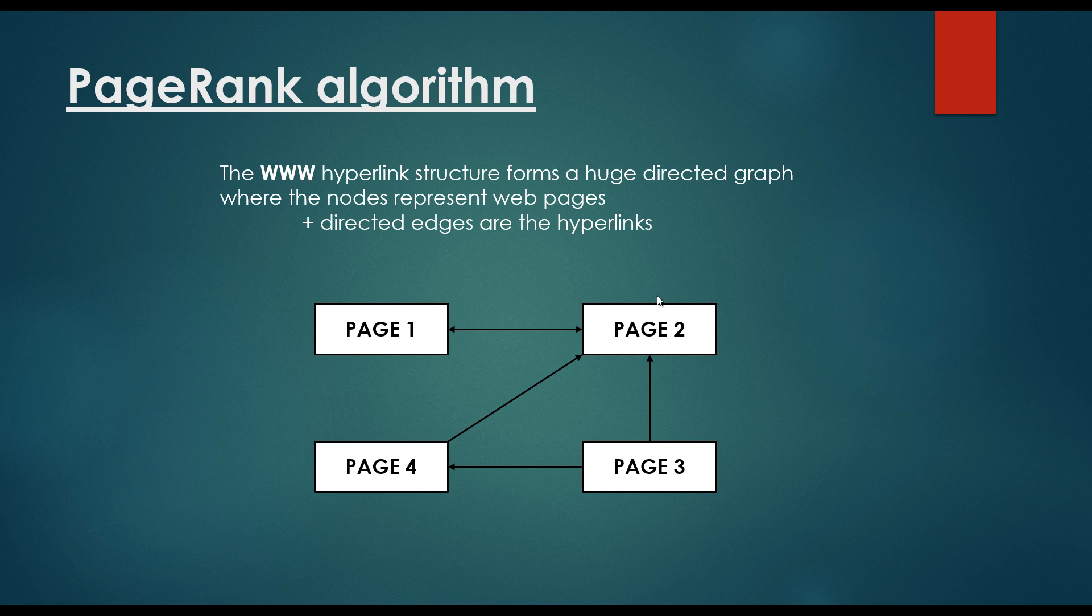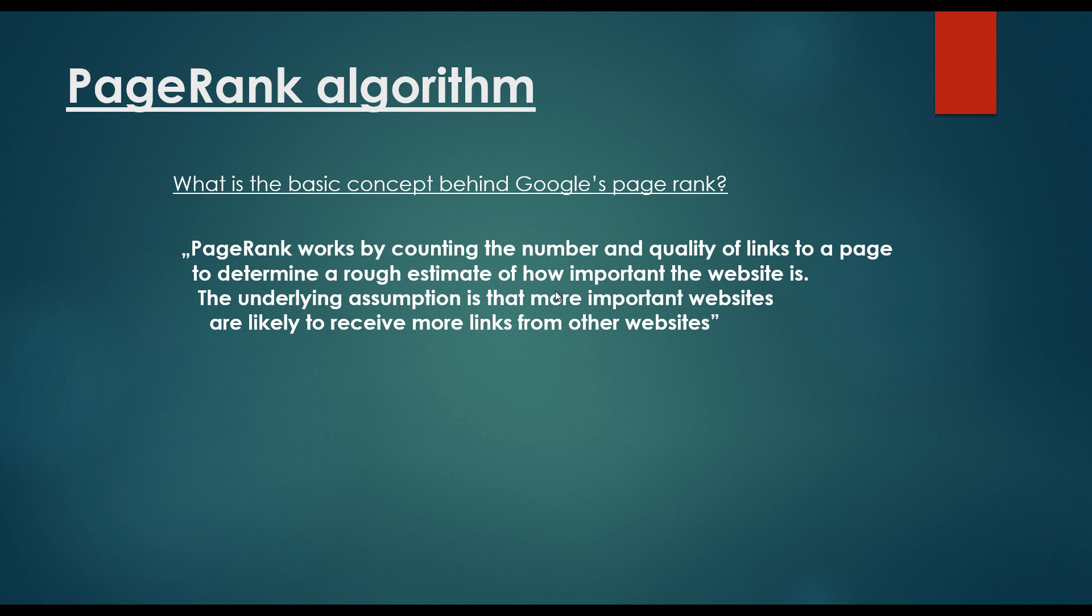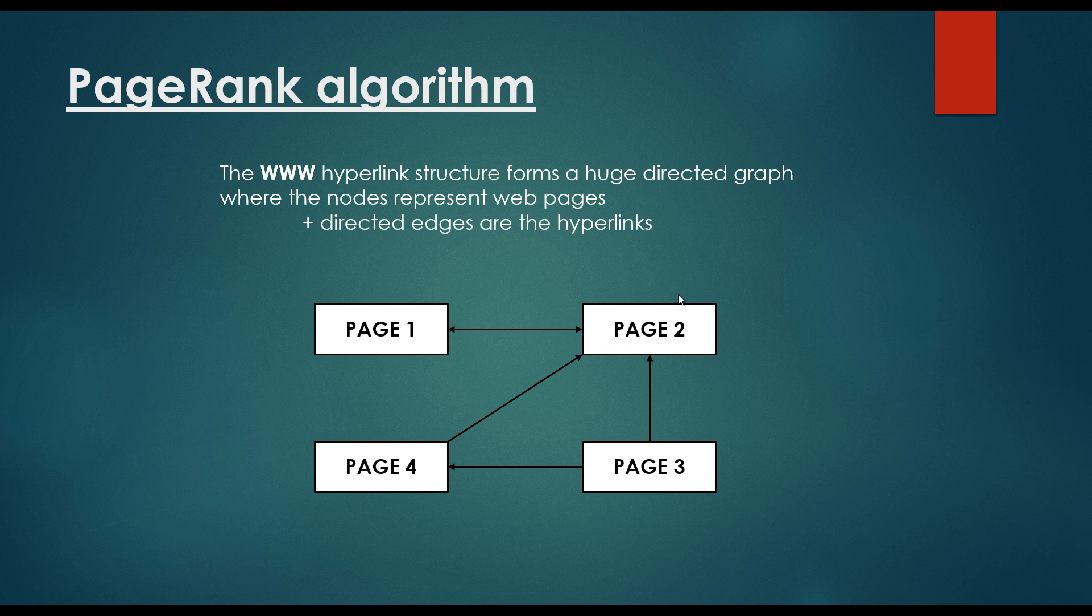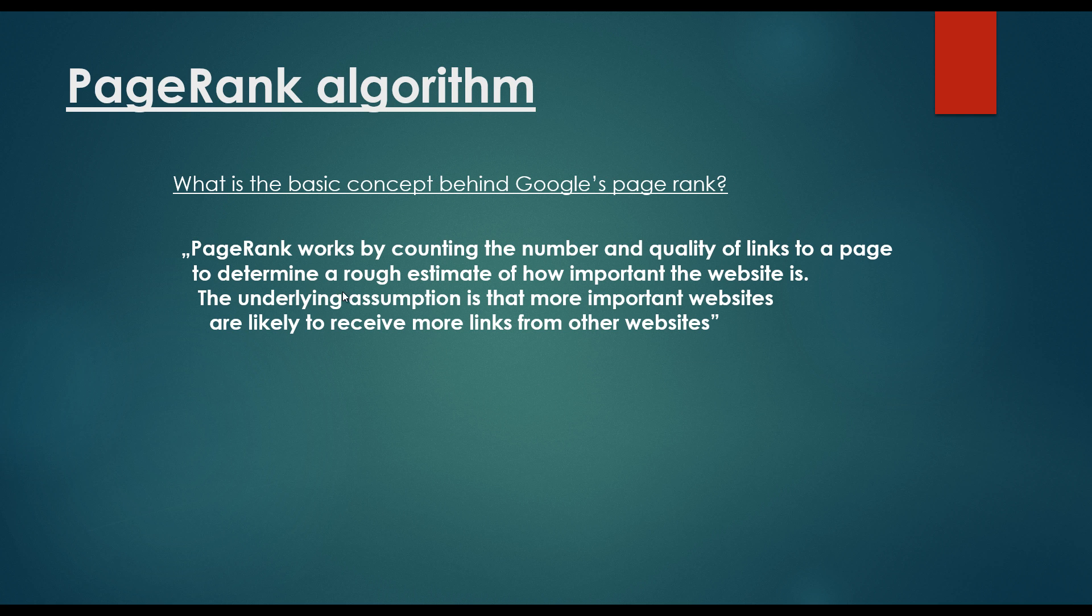So we can have a guess that if we have a website that lots of other websites are pointing to it, it may be an important website. The underlying assumption is that more important websites are likely to receive more links from other websites. So we can say that this website is important if other important websites are pointing to that given website. This is the main concept behind Google's PageRank algorithm.